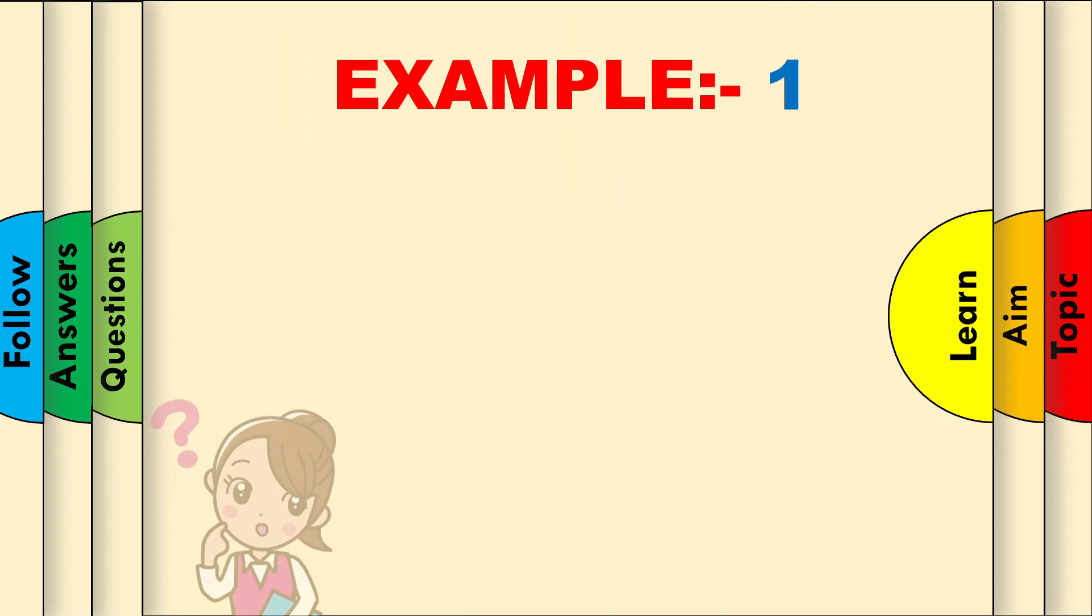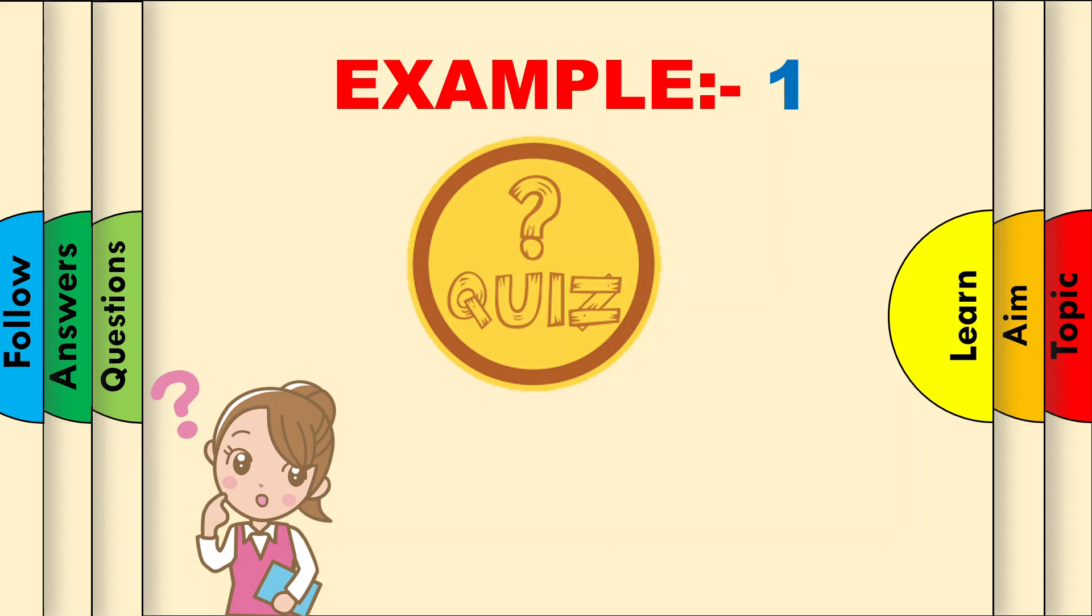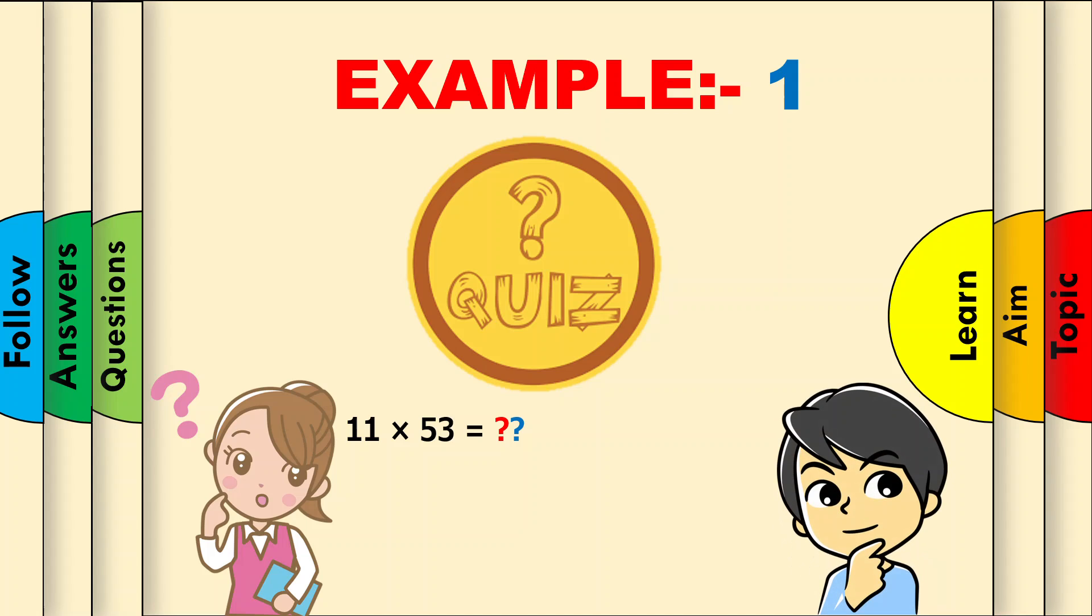Daisy is working hard for a quiz, but she's finding it hard to calculate 11 times multiplication questions. Just then Sam came to the rescue. I'm going to teach you an awesome trick to master the 11 times table. It works for multiple digit numbers too.